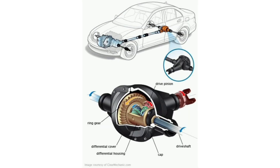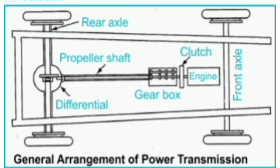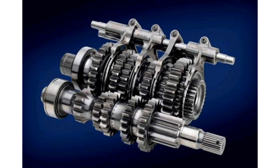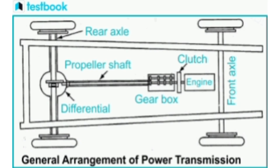The requirements of a transmission system include: allowing the engine to remain disconnected from the road wheels until engagement is required, facilitating a smooth and gradual connection between the running engine and the road wheels avoiding abrupt jerks, providing adjustable leverage between the engine and road wheels to accommodate various conditions such as starting from a standstill, maintaining a constant speed or ascending a hill, enabling reduction of engine speed as needed, redirecting the drive at a 90-degree angle, permitting differential speed for inner and outer road wheels when following a curved path, and allowing for relative motion between the engine and road wheels as they move up and down due to uneven road surfaces.